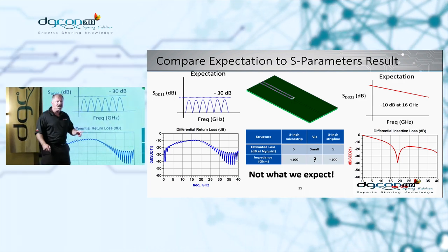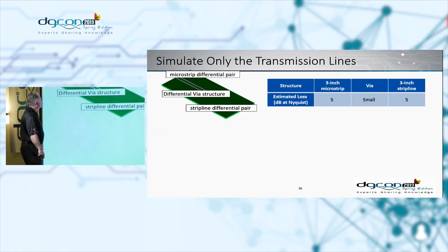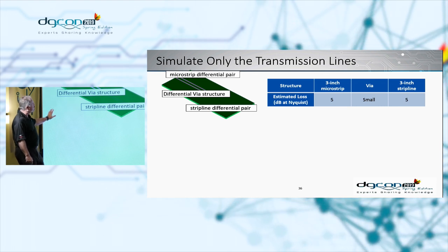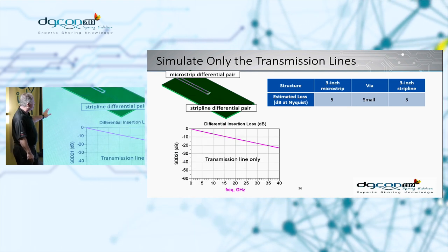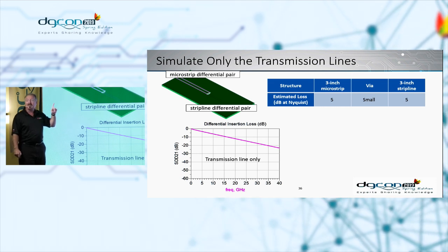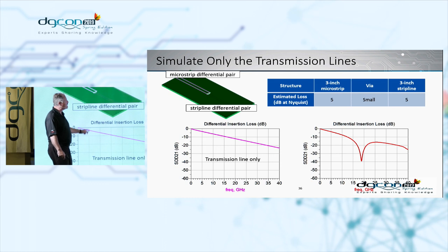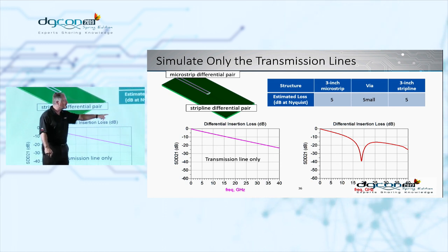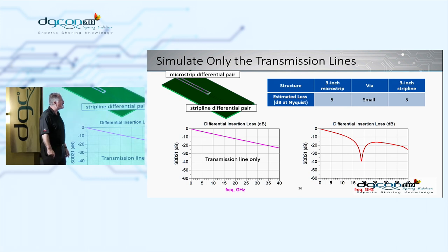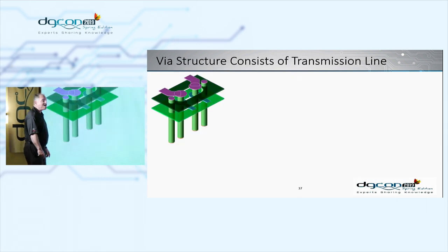When we simulate just the transmission lines without the via, we get the straight line we expect. When we put the via back in, we see the dip again. So now we're thinking it's probably the via causing the problem.